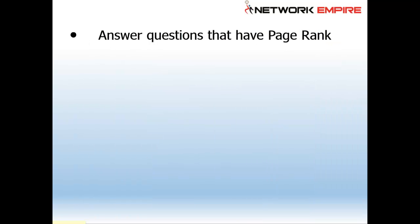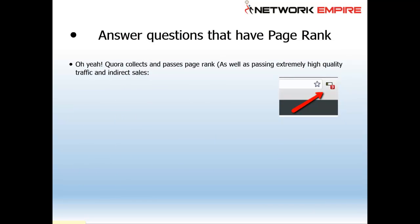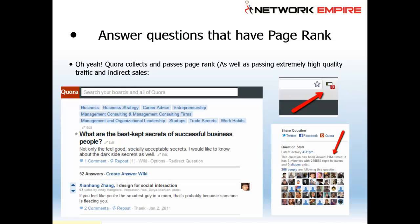Answer questions that have page rank. Quora collects and passes page rank, as well as passing extremely high-quality traffic for indirect sales. For example, the question 'What are the best kept secrets of successful business people?' has a page rank of three. If you wanted to answer a question for the first time, that's a pretty good one — just type it into the search bar, look at it, and answer it if you feel moved.